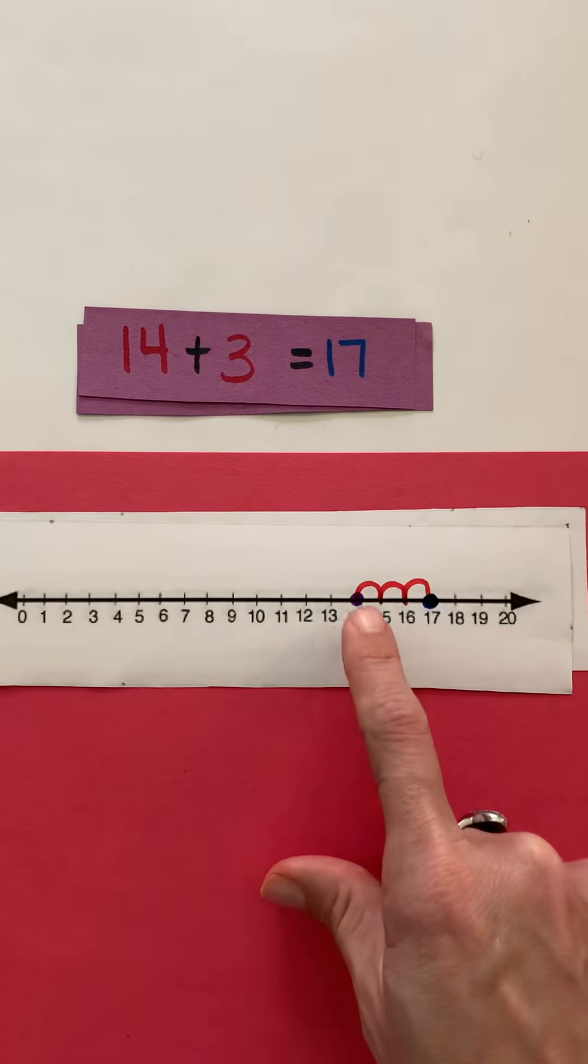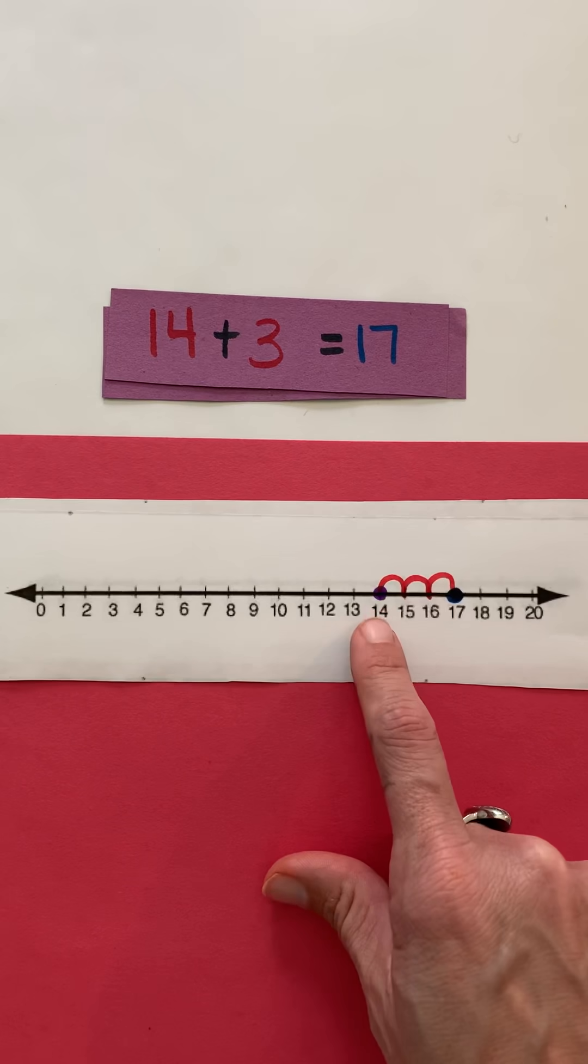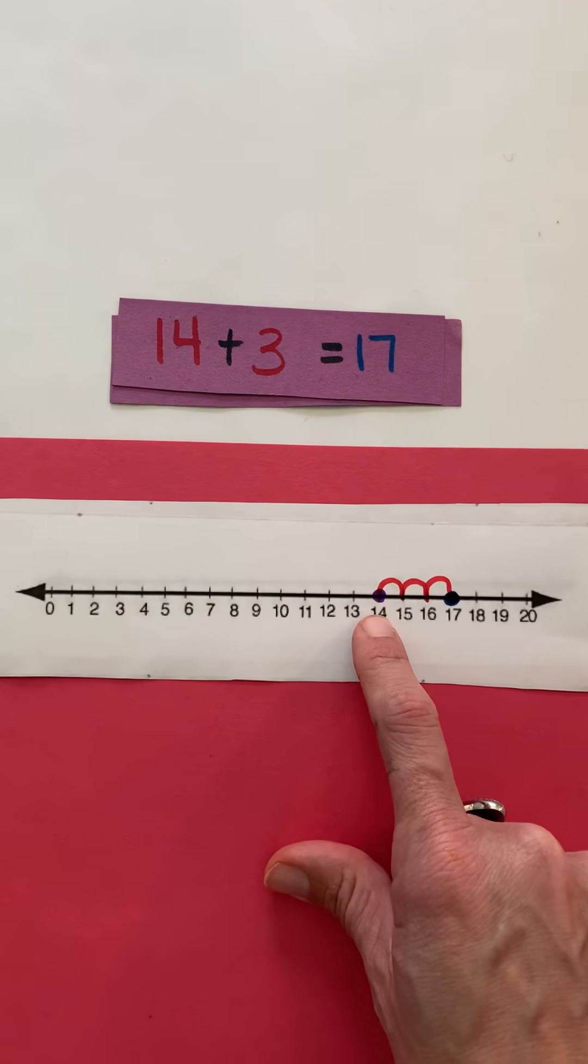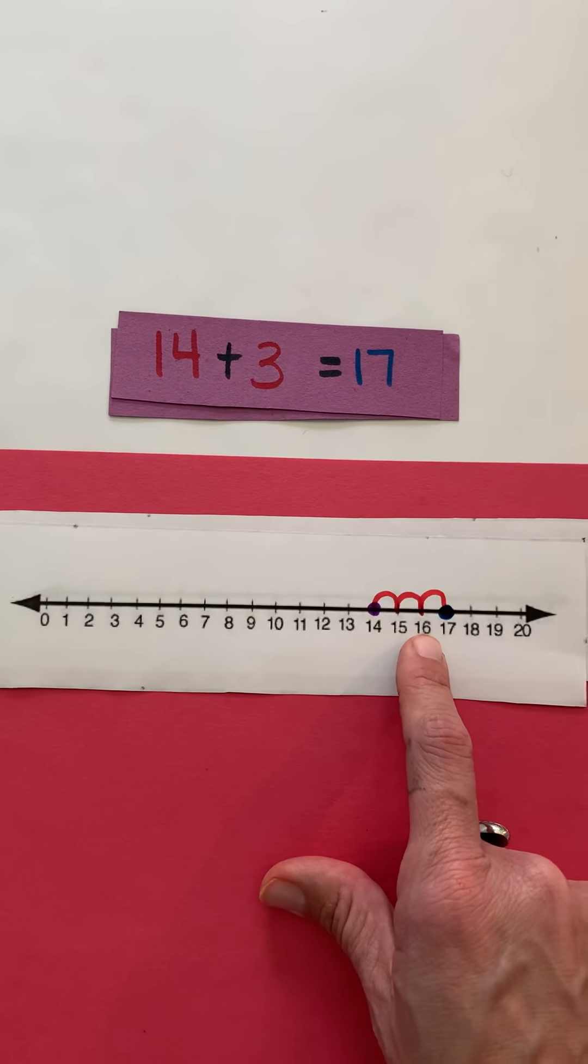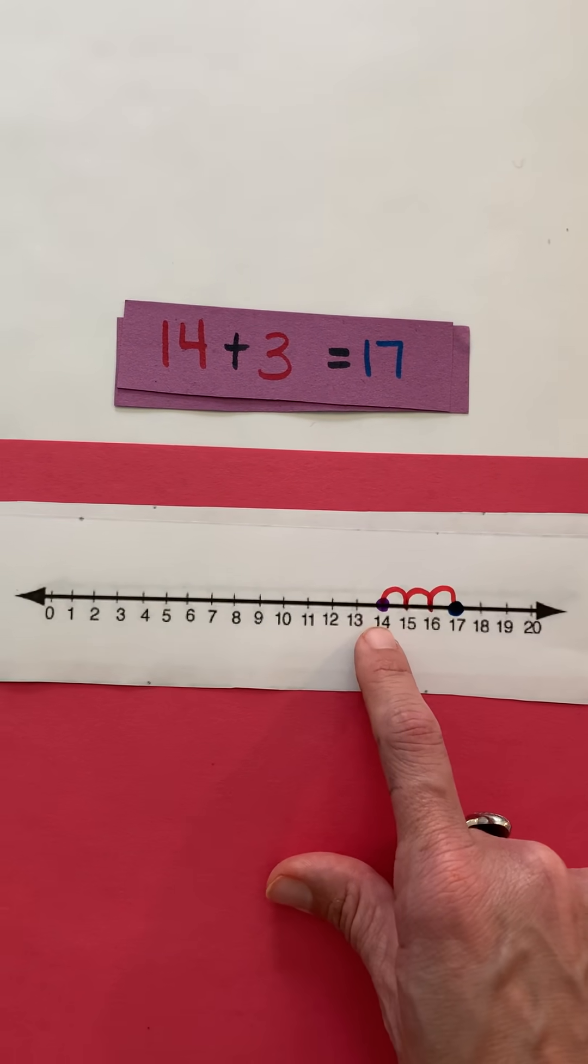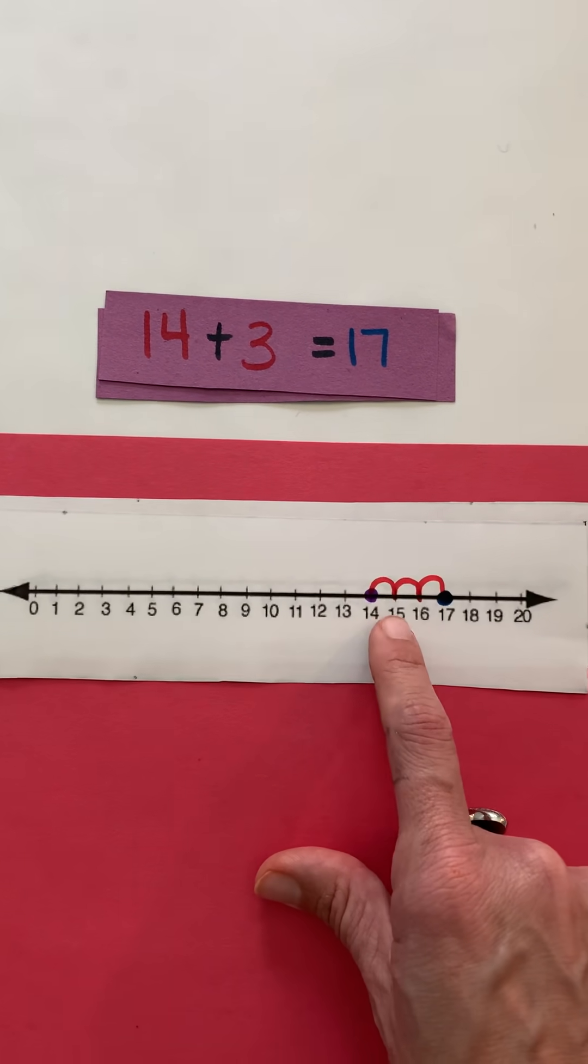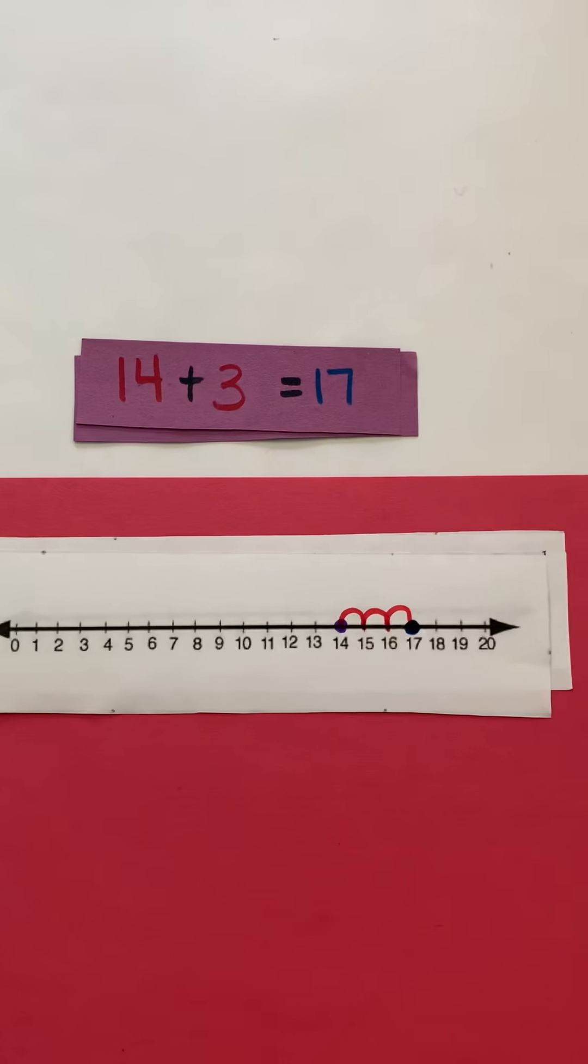Now you can definitely just use your finger and jump one, two, three. Remember you don't count where you are. I know sometimes some of us want to count one, two, three, and that would give us a sum of 16 which is not correct. Remember, for it to count you have to jump off to the next number, so one, two, three to get 17.